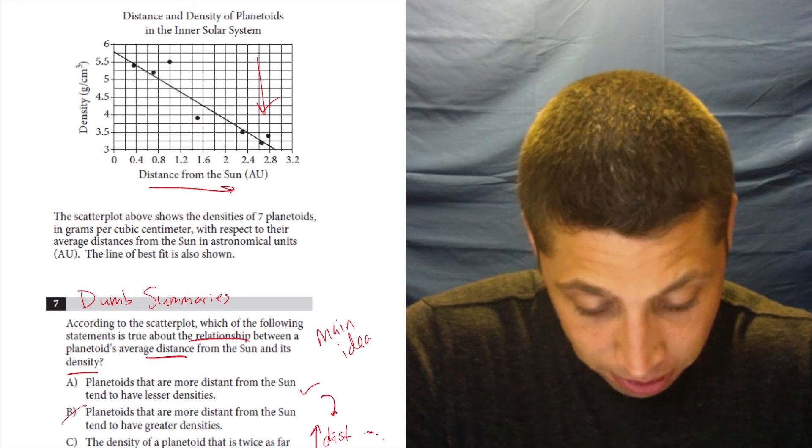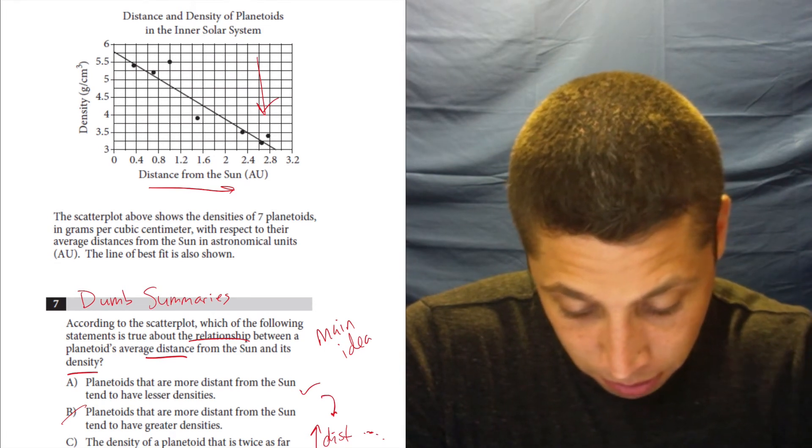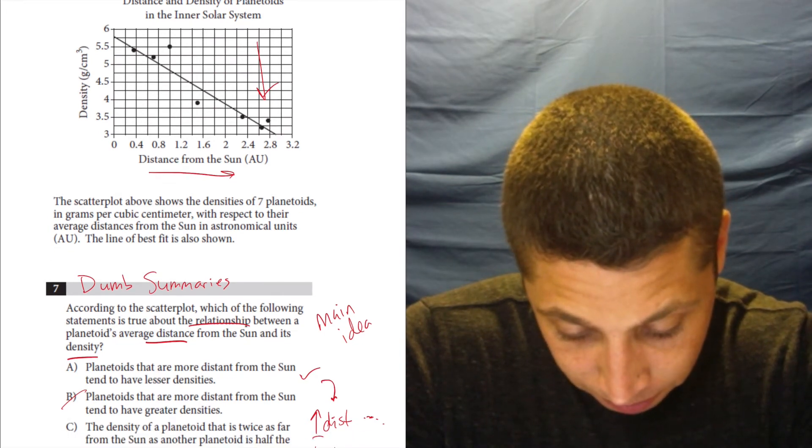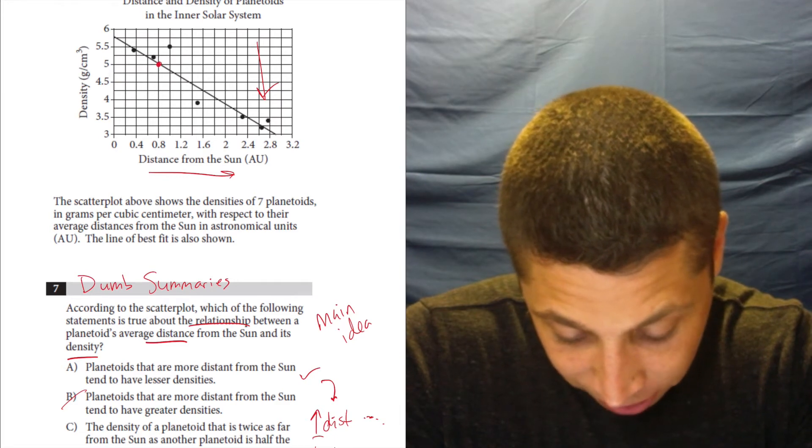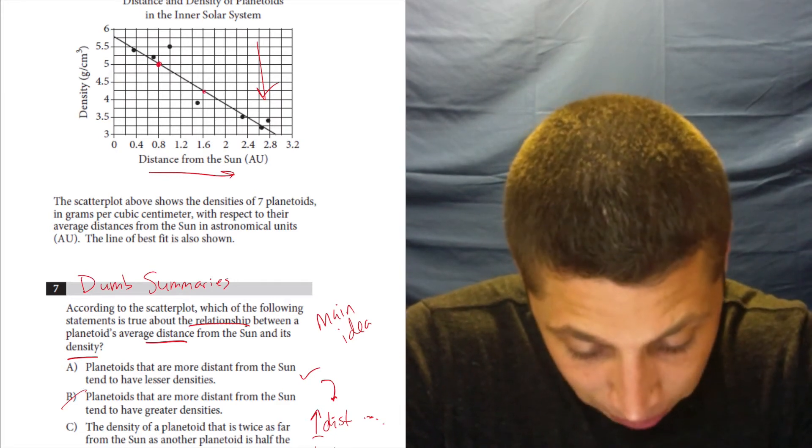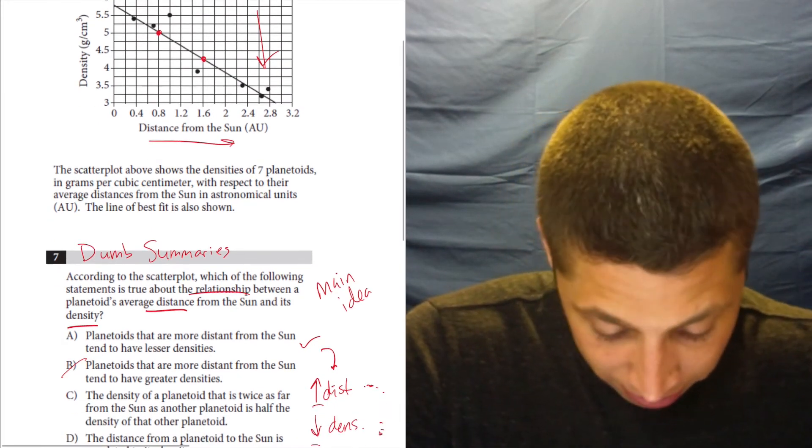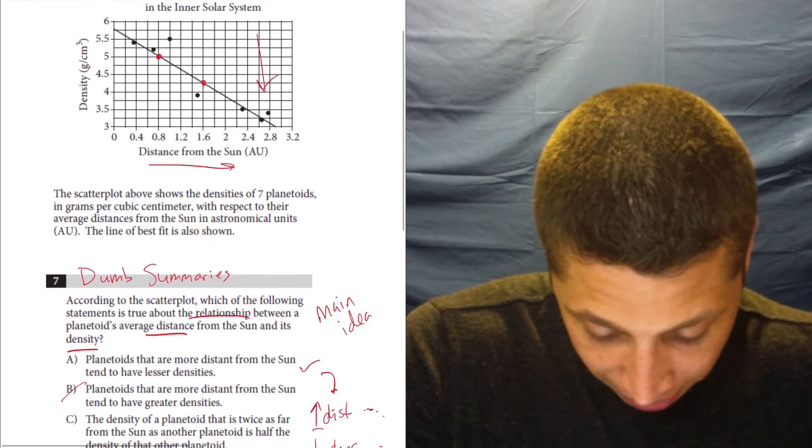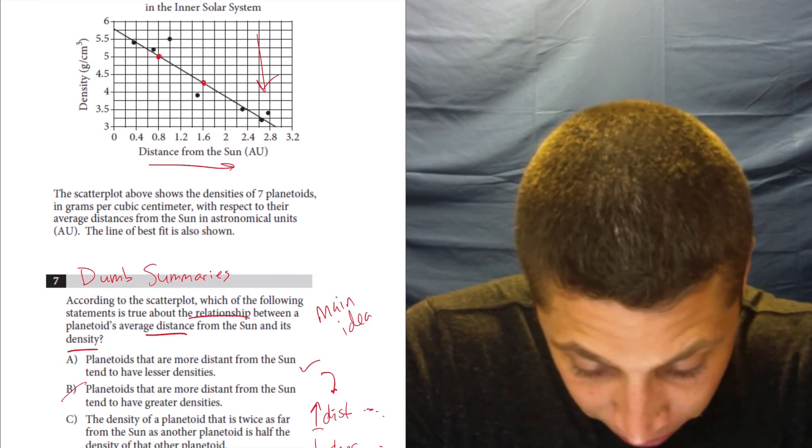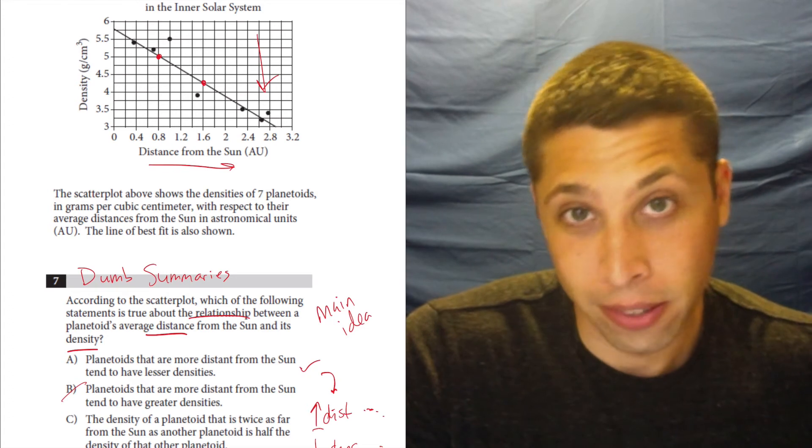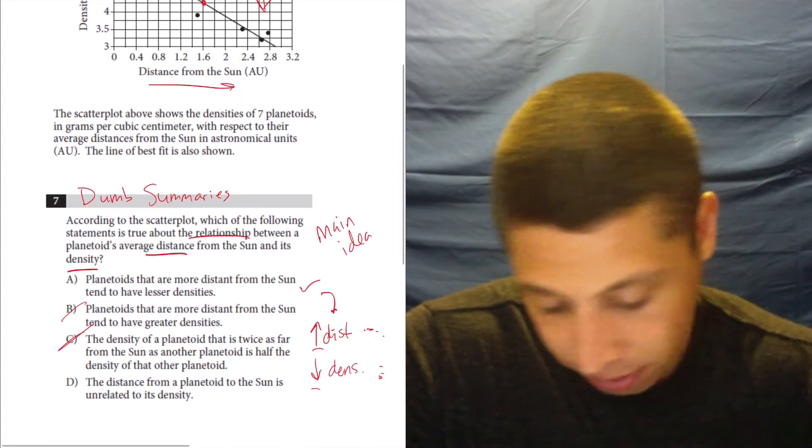So, pick some easy ones here. So, 0.8 is right here. So double it to 1.6. The density is twice as far as half. So that goes from 5 to 4.25. So 4.25 is not half of 5. So no, it doesn't work.